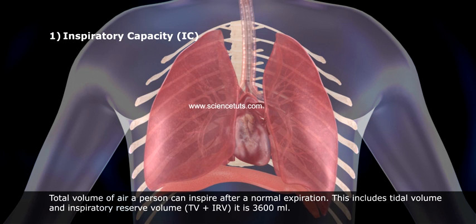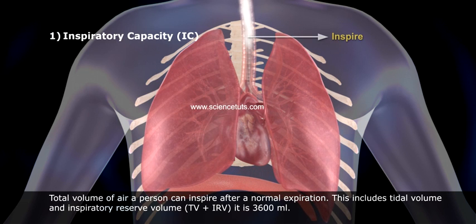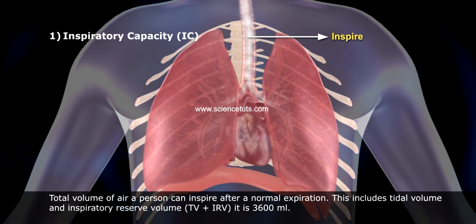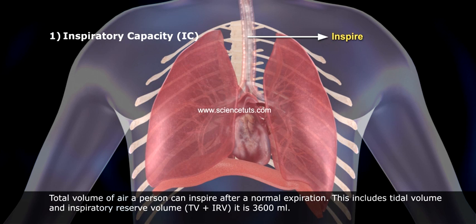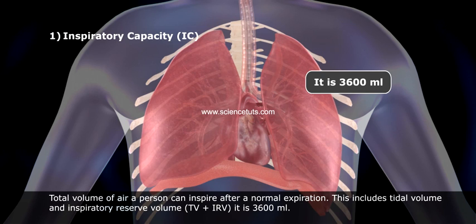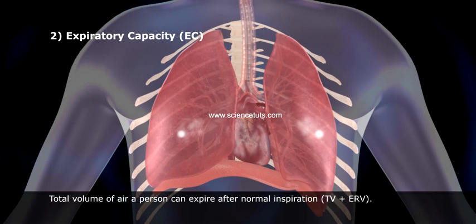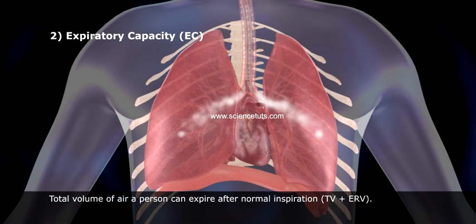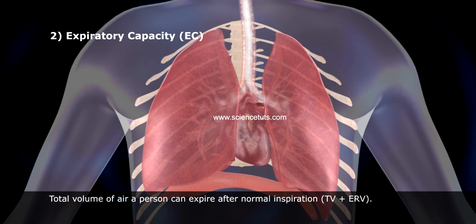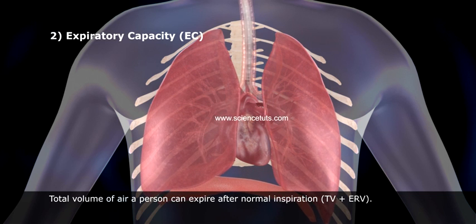1. Inspiratory capacity (IC): Total volume of air a person can inspire after a normal expiration. This includes tidal volume and inspiratory reserve volume (TV + IRV). It is 3,600 ml. 2. Expiratory capacity (EC): Total volume of air a person can expire after normal expiration. It equals TV plus ERV.